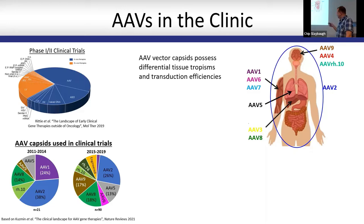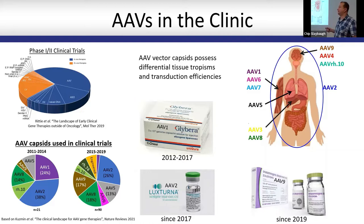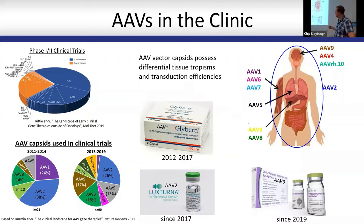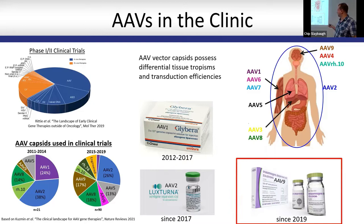To date, there are three approved gene therapy biologics on the market — right now actually just two because one has been taken off as it was not financially viable. These three products were Alglybera, which is an AAV1 capsid vector; Luxturna, which is based on AAV2 capsid; and then there's Zolgensma, which is an AAV9 vector for the treatment of SMA type 1, which I will focus a little bit more on today.